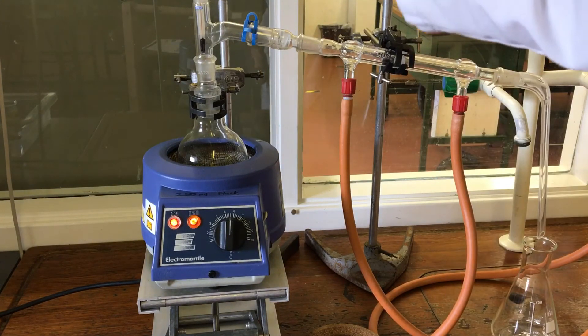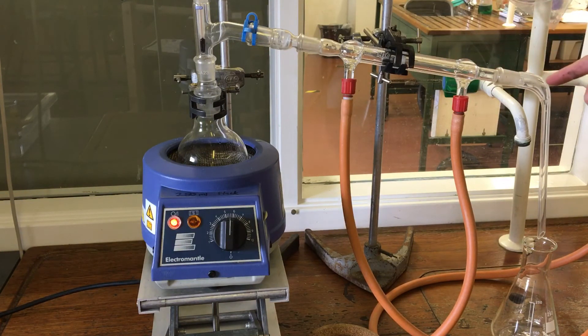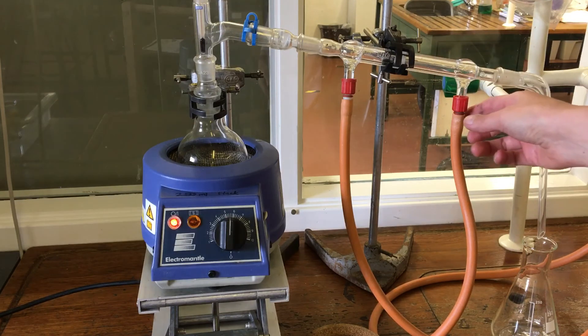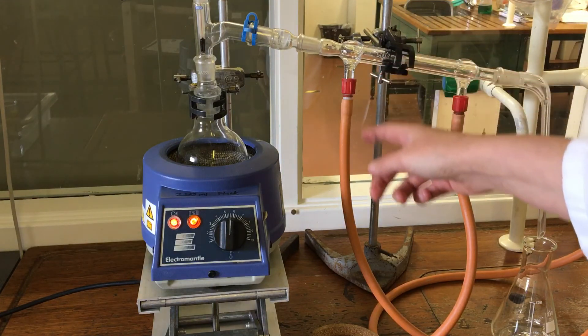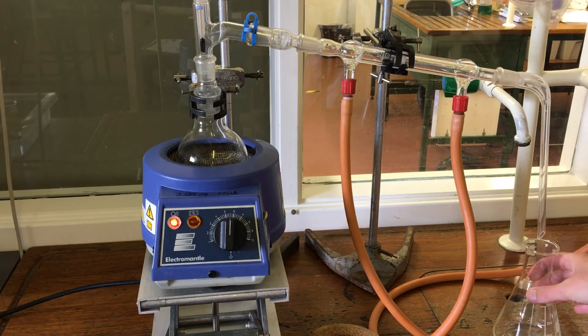So this is the thermometer part here, and this is the condenser. The condenser is just a jacket of cold water. We've got cold water coming from the tap going in here. It goes around the condenser and then out here. And this part here is where we'll get our pure liquid.